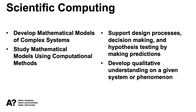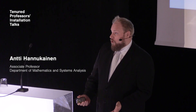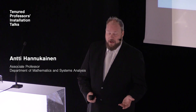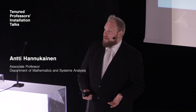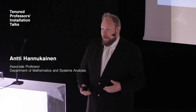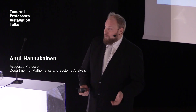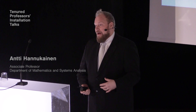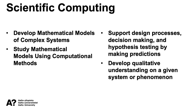Broadly speaking, what one tries to do in scientific computing is: you have a complex system. For instance, as I have worked with electrical engineers, where the system of interest is an electrical machine — typically a transformer or an electrical motor. The aim is to create a mathematical model of that system. Then the scientific computing part comes: you use computational methods to study your mathematical model.